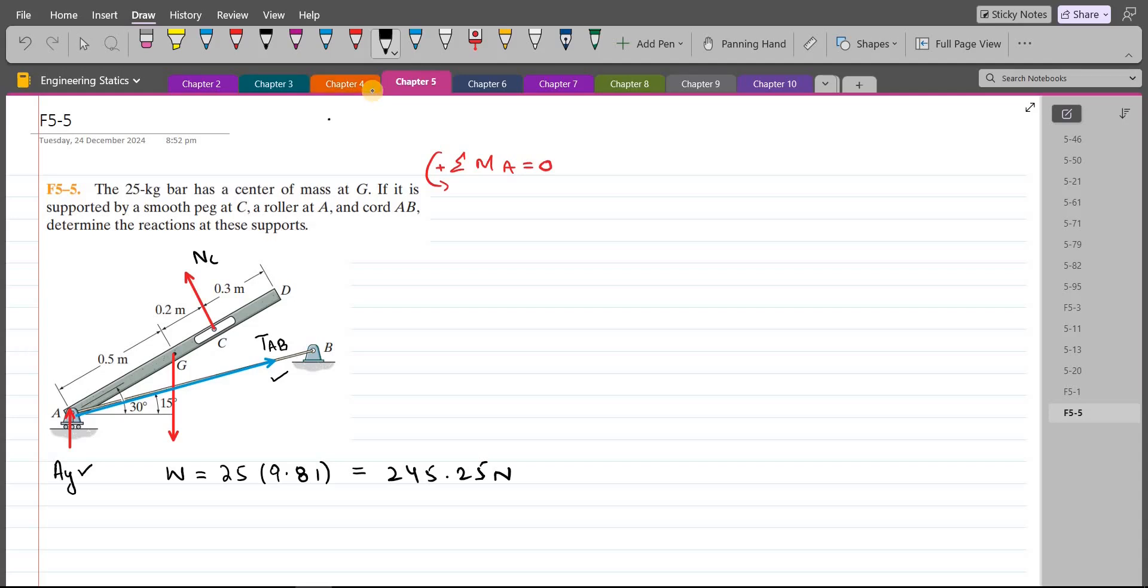The weight force is trying to rotate the bar in clockwise direction, so the moment produced by this weight force will be taken as negative. So I have negative 245.25, and the moment arm is this horizontal distance, which is actually 0.5 cos 30.